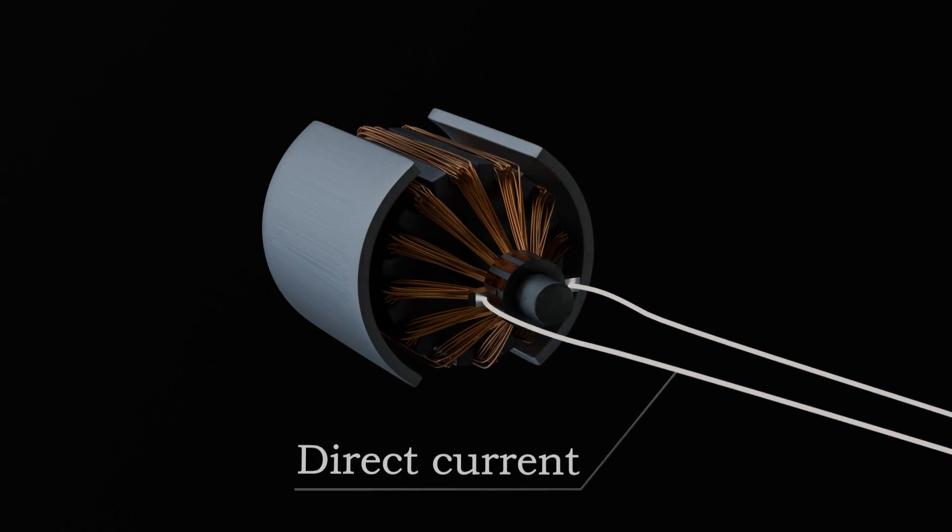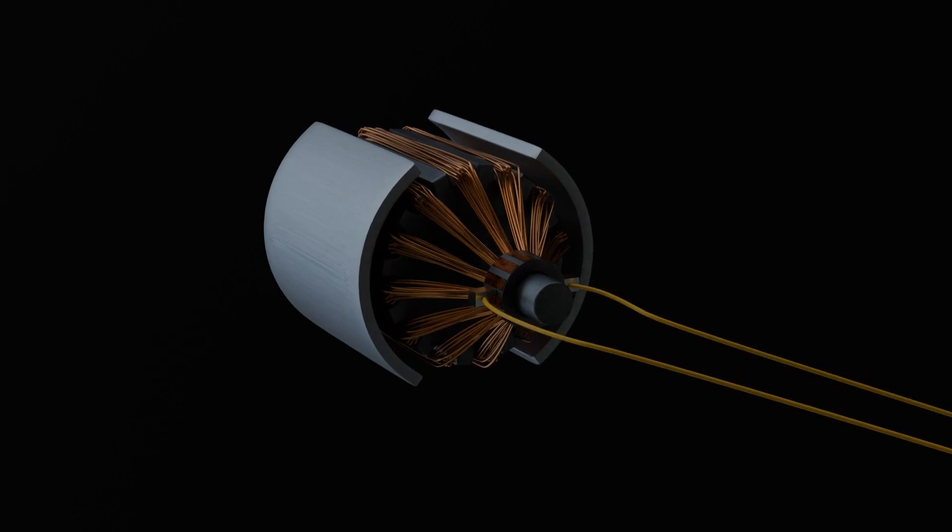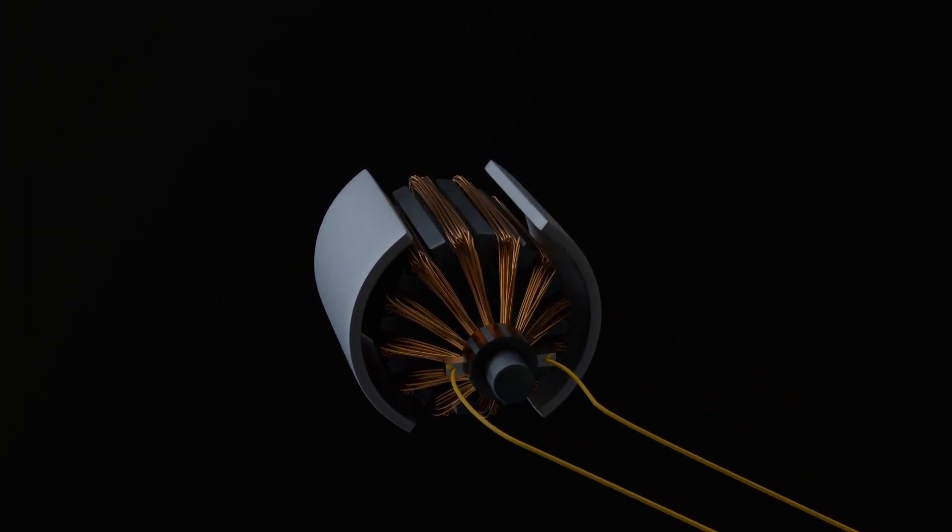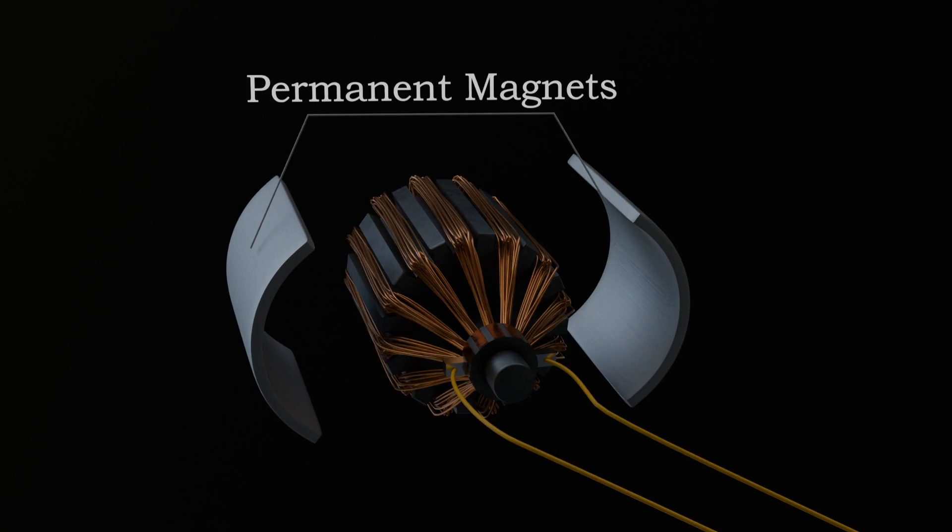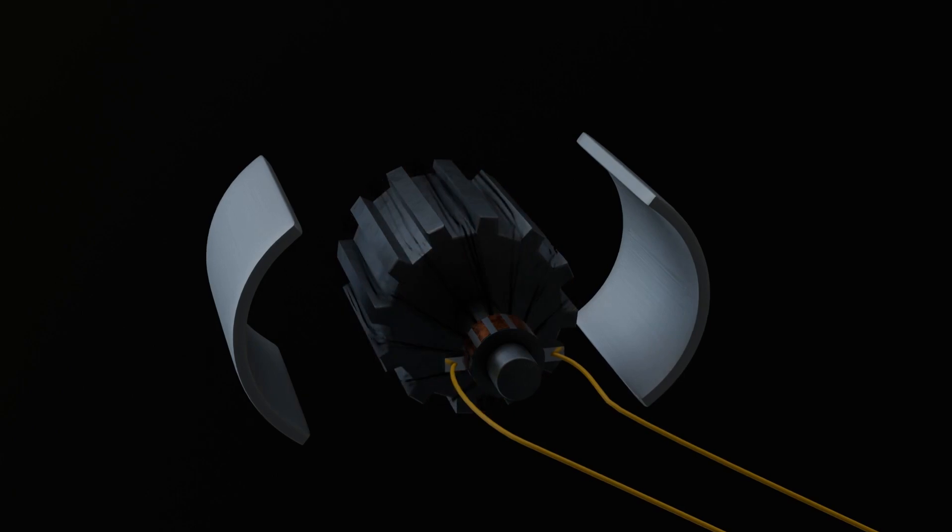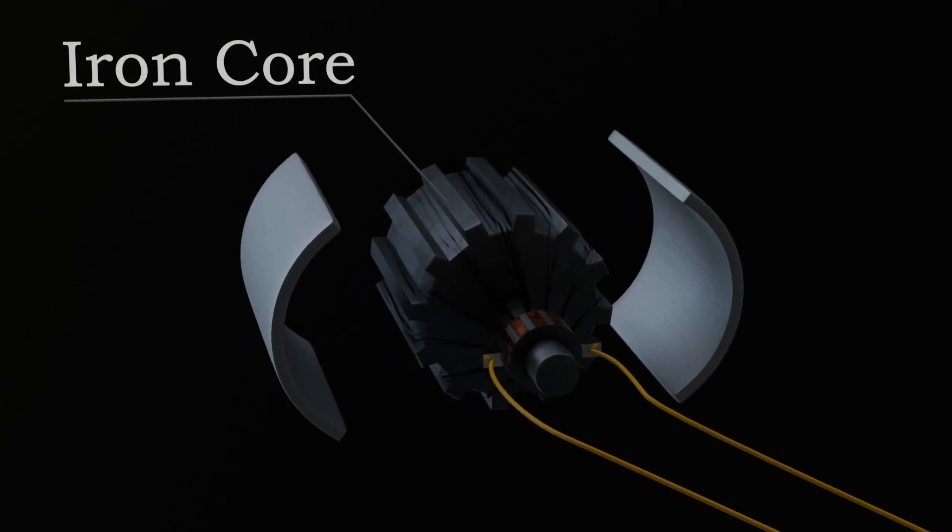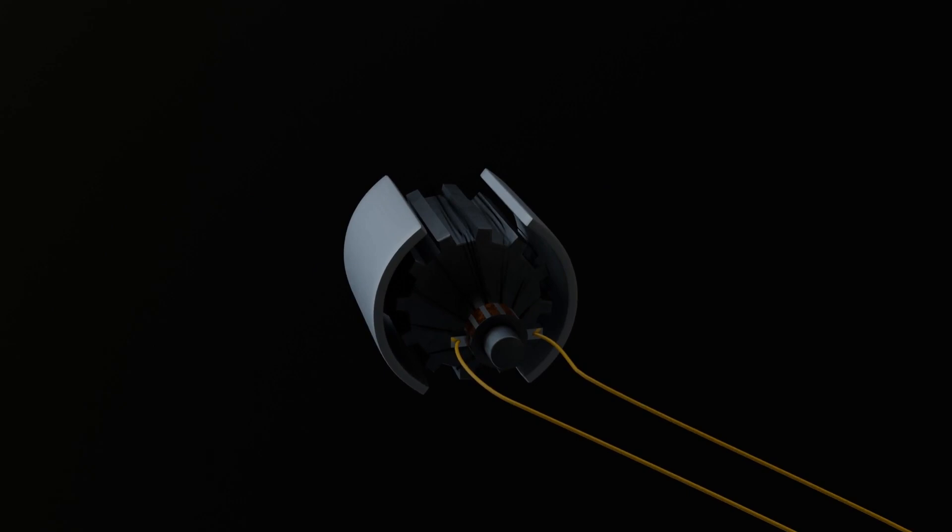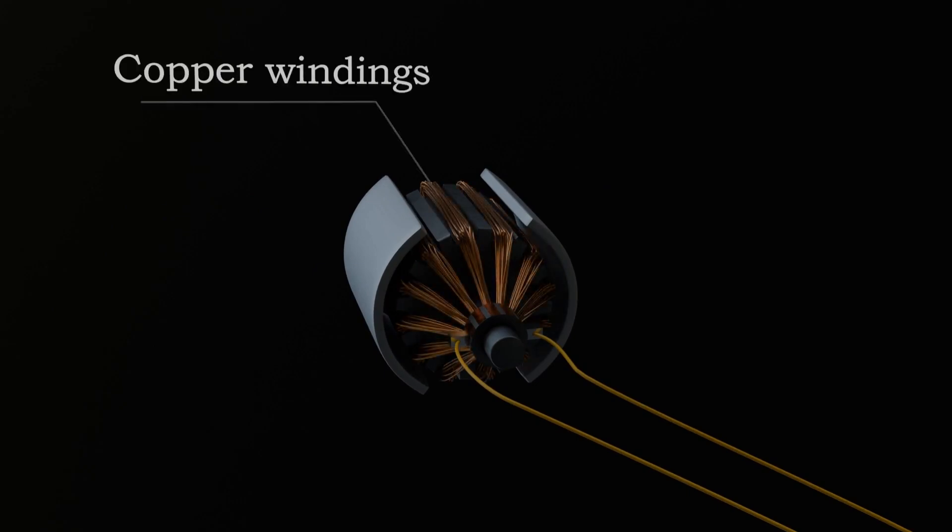An industrial DC motor is designed to operate using direct current DC electricity and is constructed with several key components. The motor has strong, curved magnets that create a stable magnetic field, within which lies the rotor, the part that rotates. The rotor is built around a core made of laminated iron or steel. This core enhances the rotor's magnetic properties and provides a structure for the windings, which are copper wires wound tightly around the core.